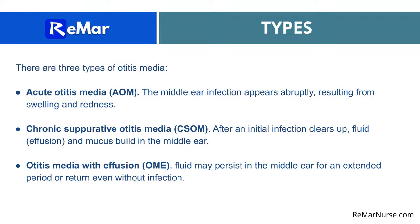There are three types of otitis media. Acute otitis media is a middle ear infection that comes on very quickly, with swelling and redness. Chronic suppurative otitis media is when the initial infection clears up but you still have fluid and mucus buildup in the middle ear — it's a chronic condition. Otitis media with effusion (OME) is where fluid may persist in the middle ear for an extended period, or return even without infection.